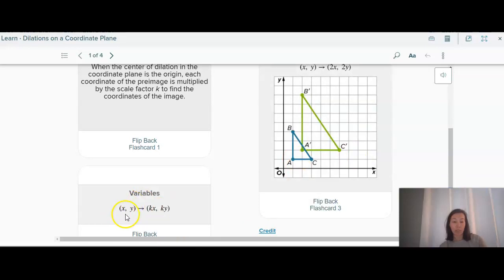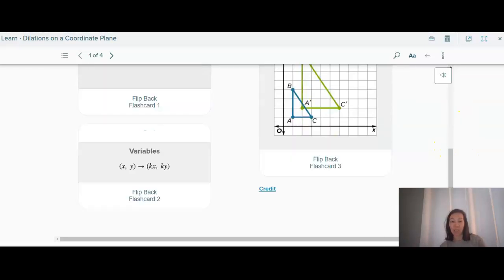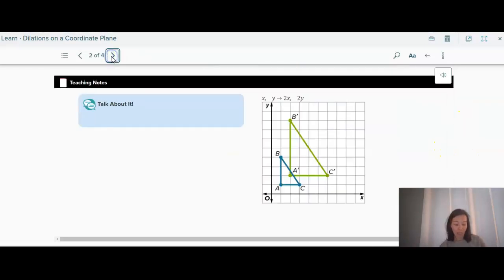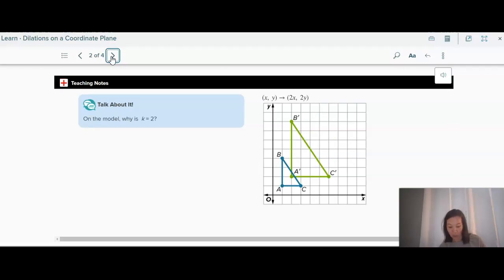So if we look at variables, x, y is just kx, ky, whatever that scale factor is, we would multiply it. So here I have the point 1, 1. If the scale factor is 2, then I just multiply 1, 1 by 2, and that's 2, 2. Here this point is 3, 1. Multiply that by 2, that's 6, 2. So you really are just multiplying each point. So that is if the center of dilation is the origin.